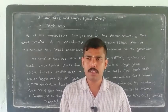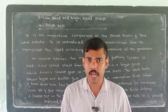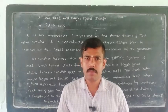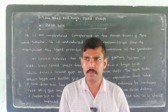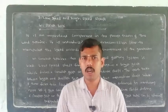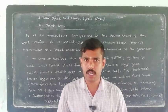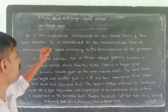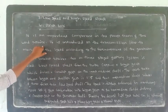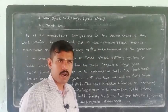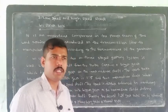The generator will produce 1000 rotations per minute — that's the manipulation. The gearbox is an important component in the power train of the wind turbine. It is introduced in the transmission line to manipulate the speed according to the requirement of the generator. The rotor speed is low speed, and the generator high speed is manipulated by the gearbox.